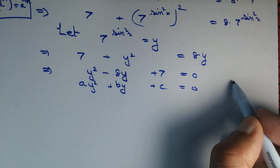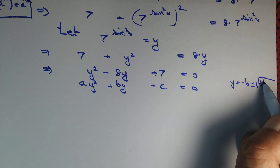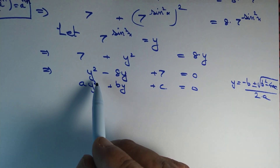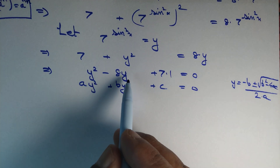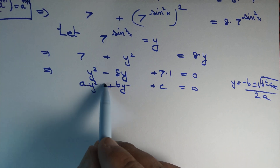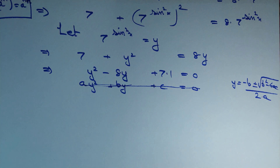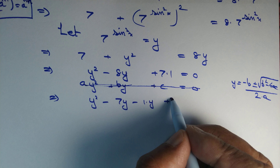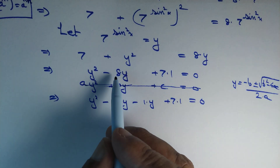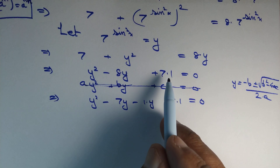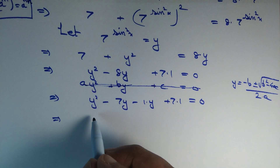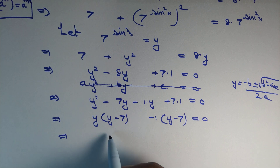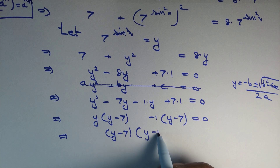The roots are given by y equals minus b plus or minus root of b squared minus 4ac all over 2a. But we can simply factorize by splitting the middle term: 7 times 1 is 7 and 7 plus 1 is 8. So y² minus 7y minus y plus 7 equals 0. Taking y common gives y(y minus 7), and taking minus 1 common gives minus 1(y minus 7). Then factoring out (y minus 7) leaves (y minus 7)(y minus 1) equals 0.